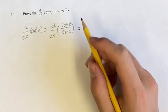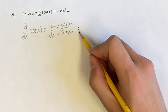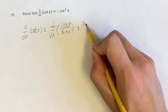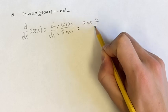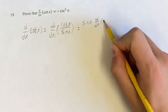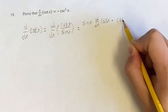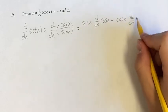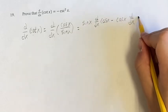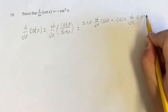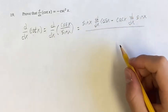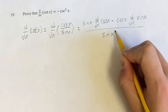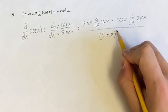So we have a fraction, we can use the quotient rule. We have the denominator, sine x, times the derivative of the numerator, minus the numerator, times the derivative of the denominator, over the denominator squared, sine x squared.